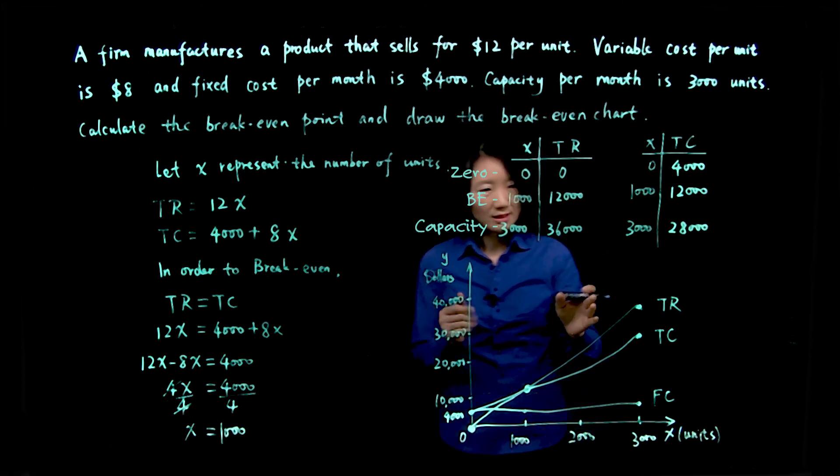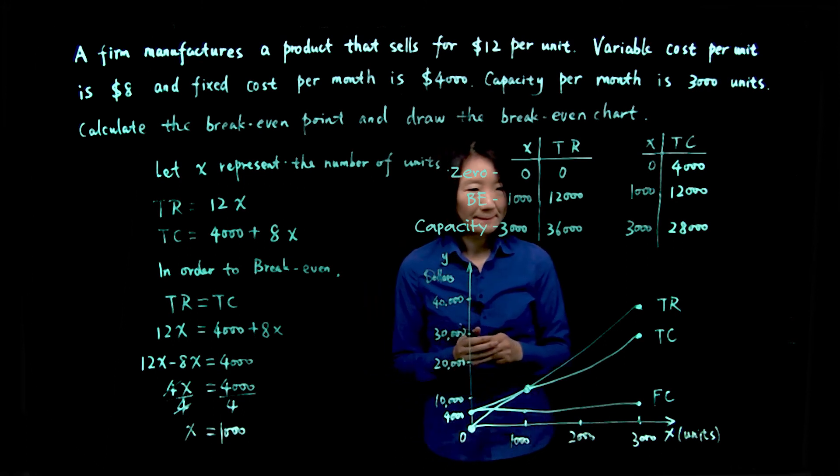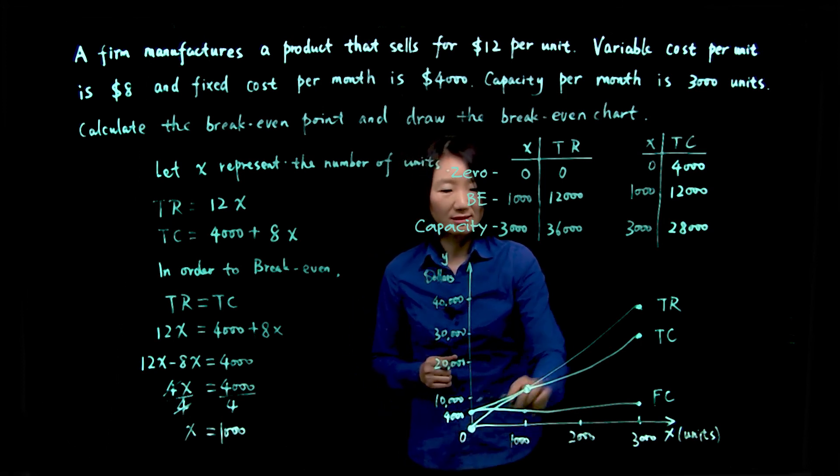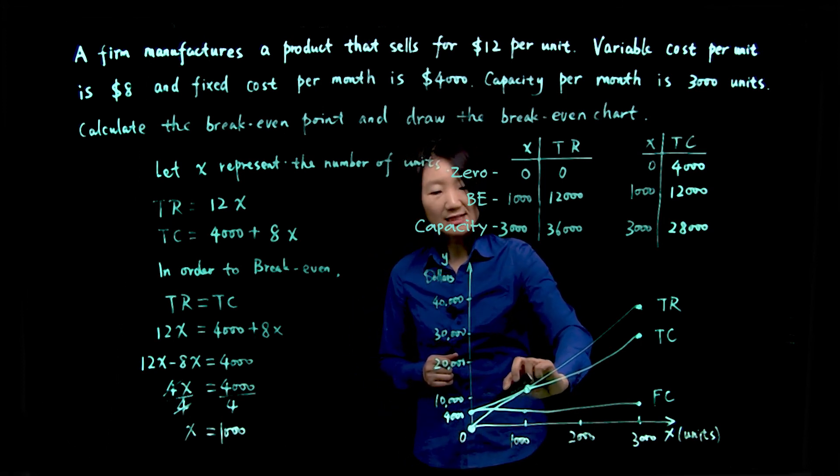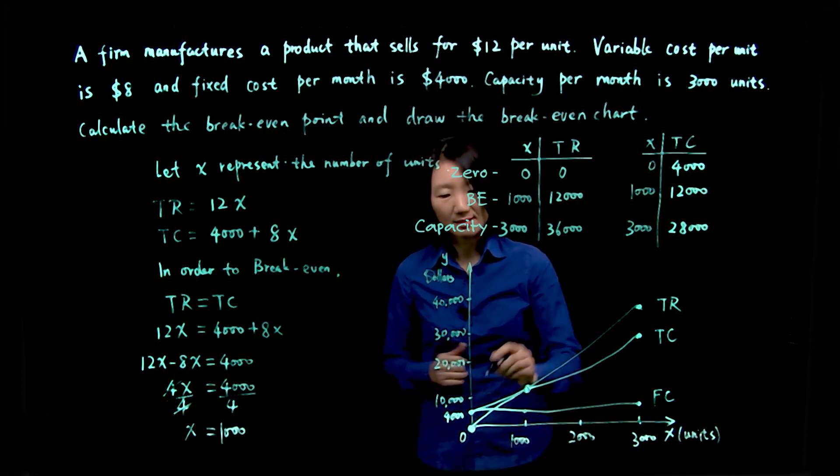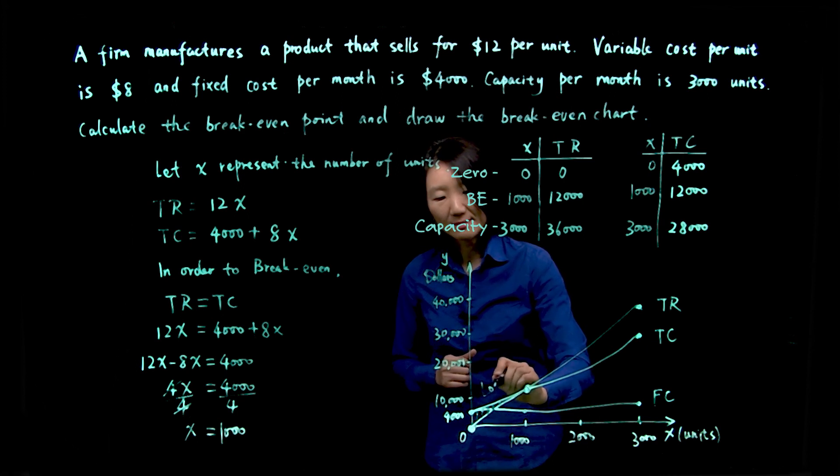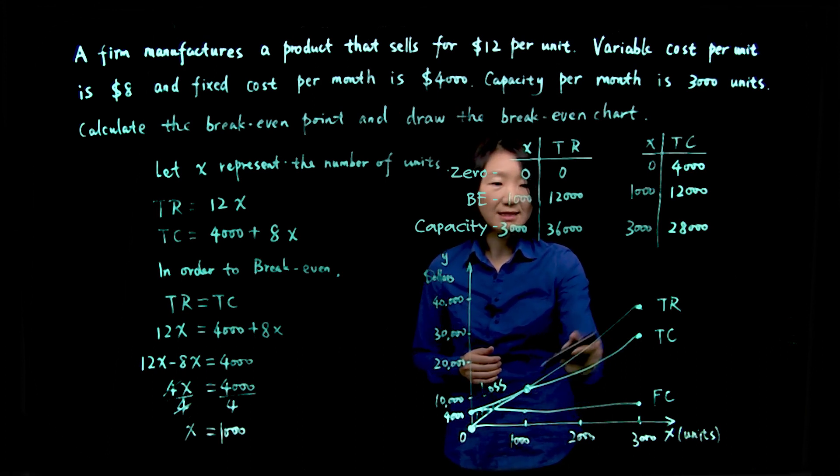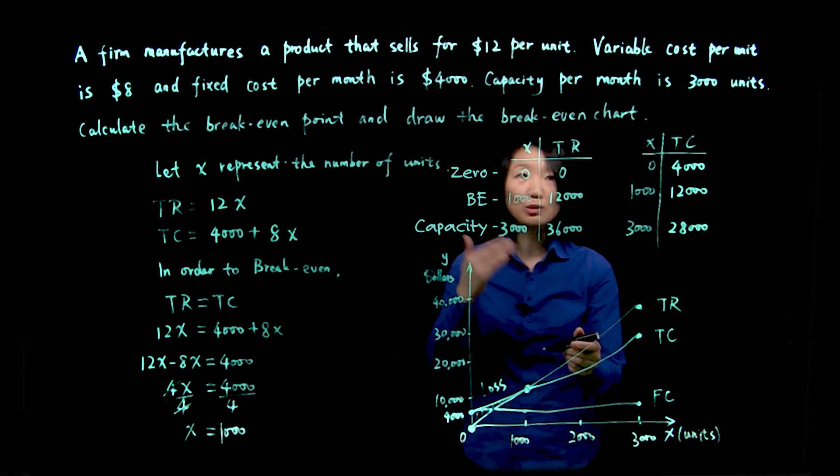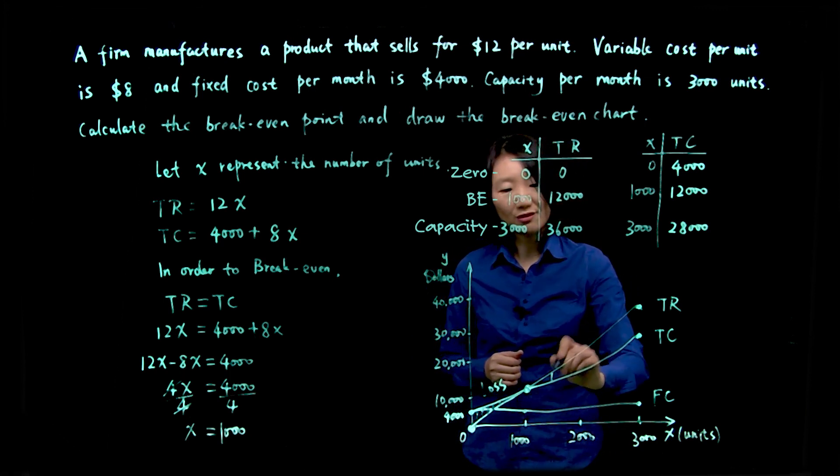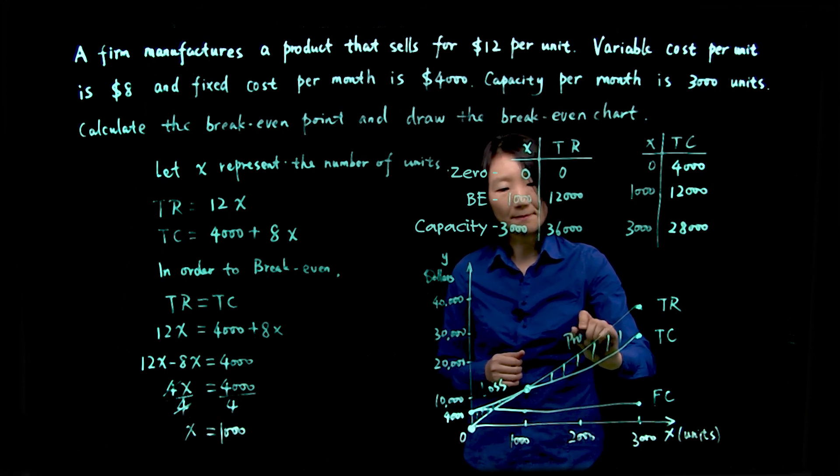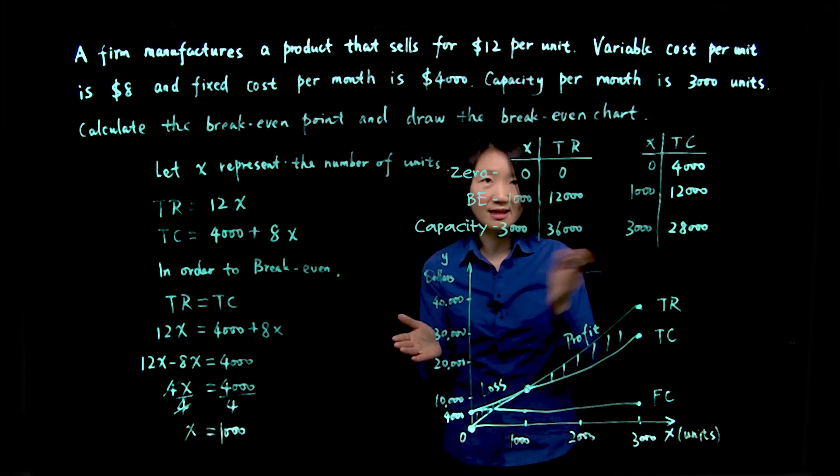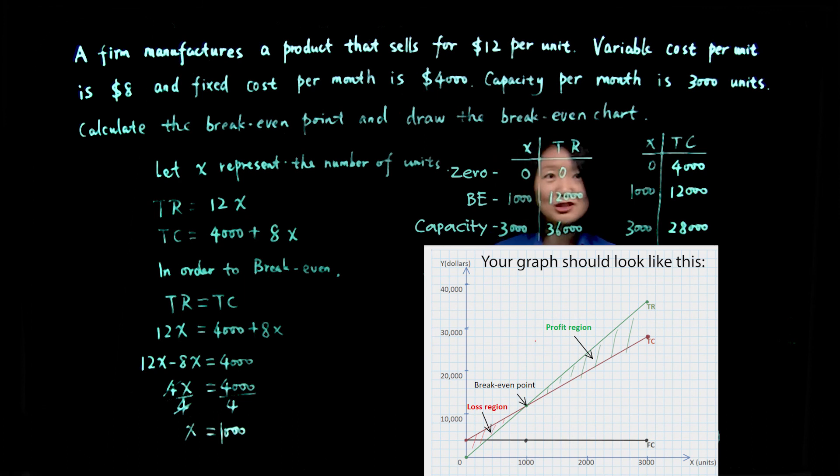Now we're done with our break-even chart, but let's look at it. So this is the break-even point. Below the break-even point, if your production is less than 1,000, as you can see, your total revenue line is below the total cost line. That means you'll be at a loss. So over here is a loss. You lose money. But once past the break-even point, your total revenue line is above total cost. That means your total revenue is more than the total cost. So over here, you'll be making a profit. And the break-even point is that threshold between loss and profit. So that's all for the chart. Thank you for watching.